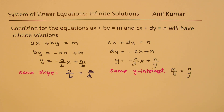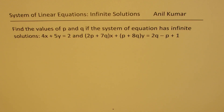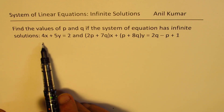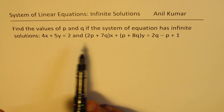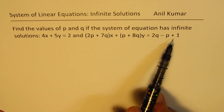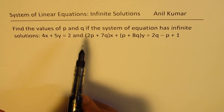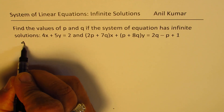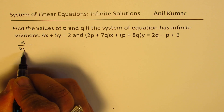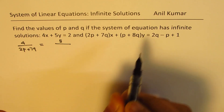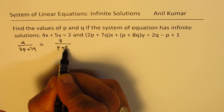That is how we are going to figure out whether the conditions are met or not. Now we have our test question: we need to find the values of p and q if the system of equations has infinitely many solutions — 4x + 5y = 2 and (2p + 7q)x + (p + 8q)y = 2q − p + 1. We need to compare the ratios of the coefficients of x and y; they should be the same. So we write: 4/(2p + 7q) = 5/(p + 8q). That is one condition.